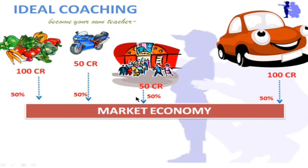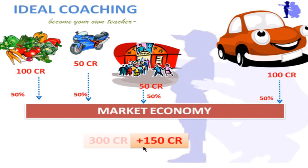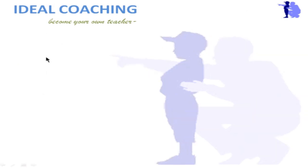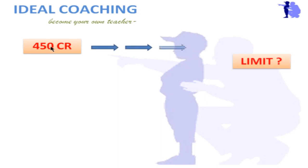If they are consuming 50 percent of what they earn, then that money also comes back into the market. This 50 percent of 300 crores is 150 crores, which is again being added to the economy — so now our economy is 300 plus 150, which is 450 crores. That means the 200 crores is now being converted and multiplied into 450 crores, and it will keep increasing slowly.